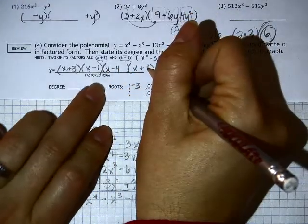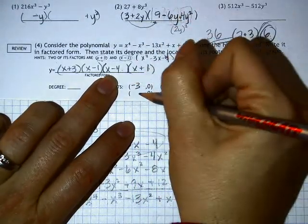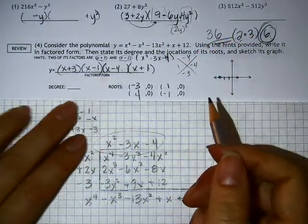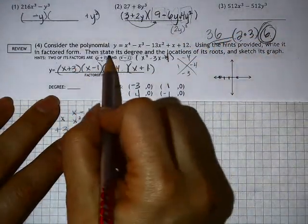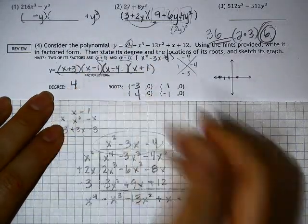So my other roots would be what? Negative 1 would be the opposite of that. Positive 4 would be the opposite of that one. And then the degree is the fourth degree or recognizing that I have four things here. Either one is fine.